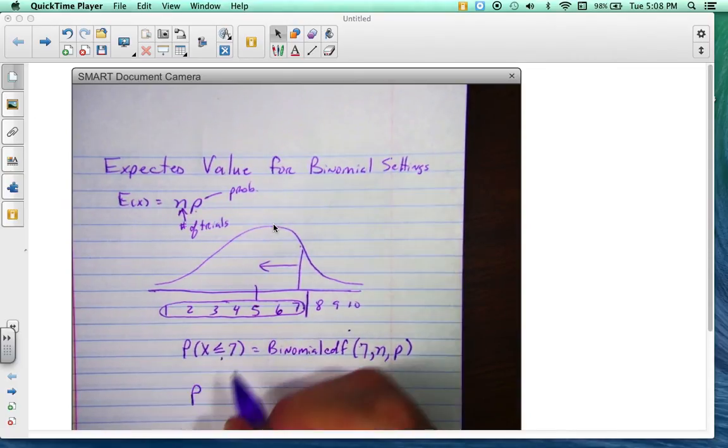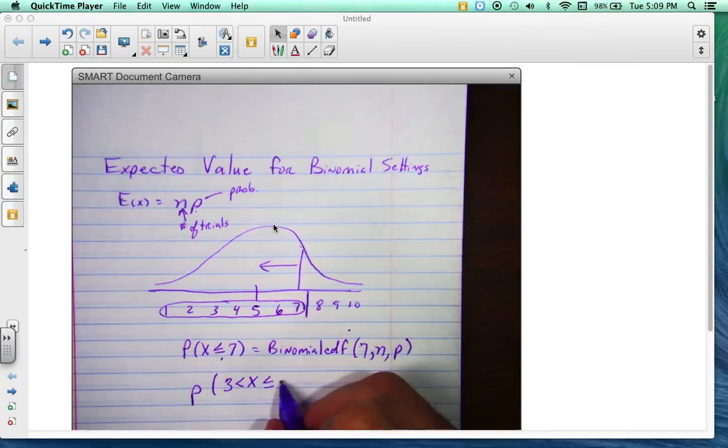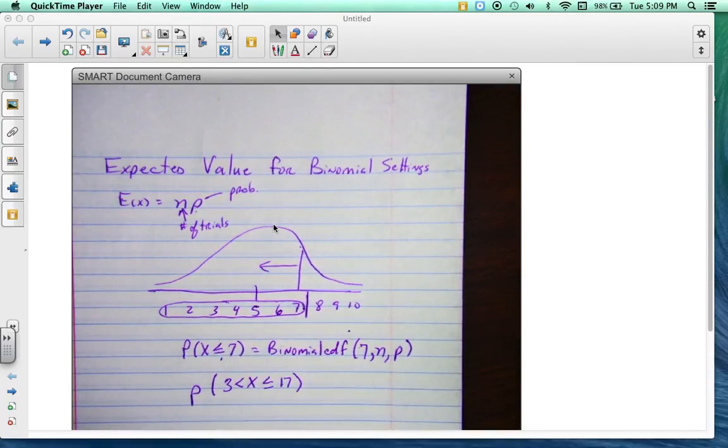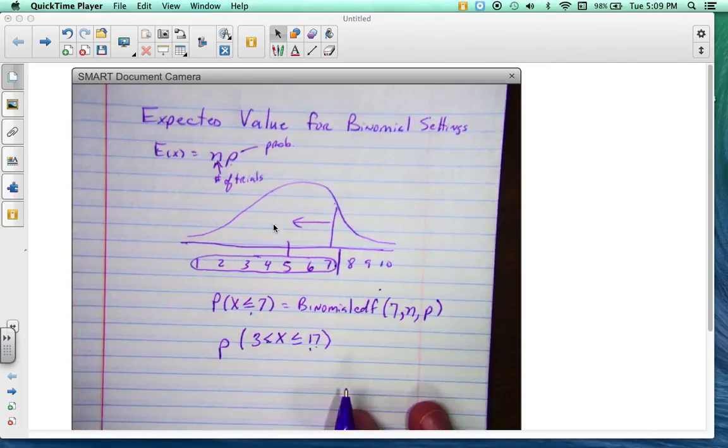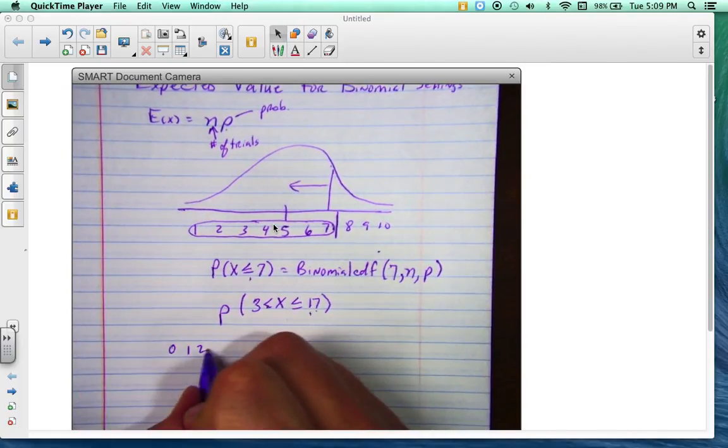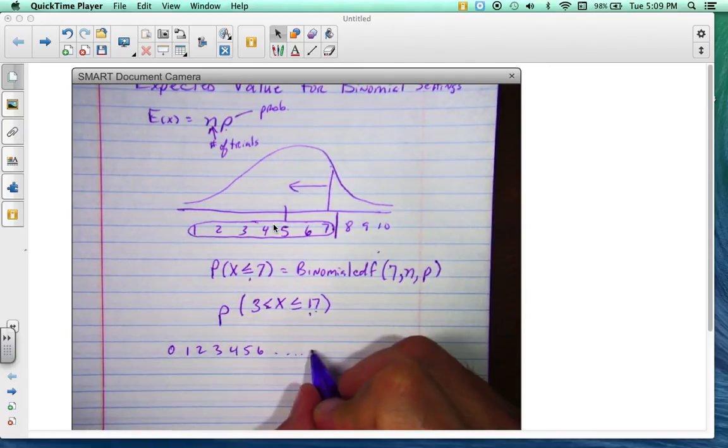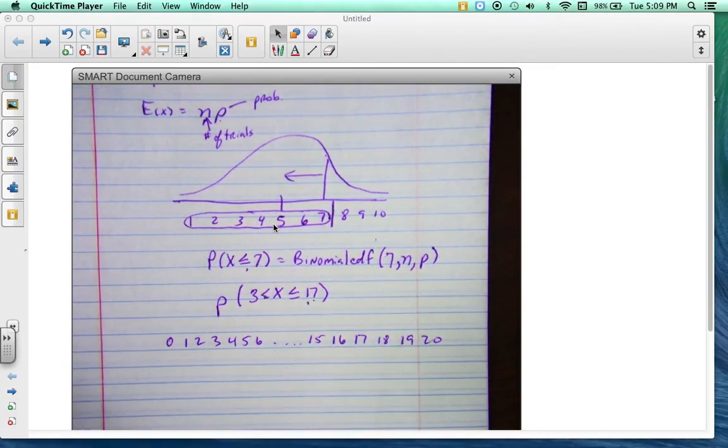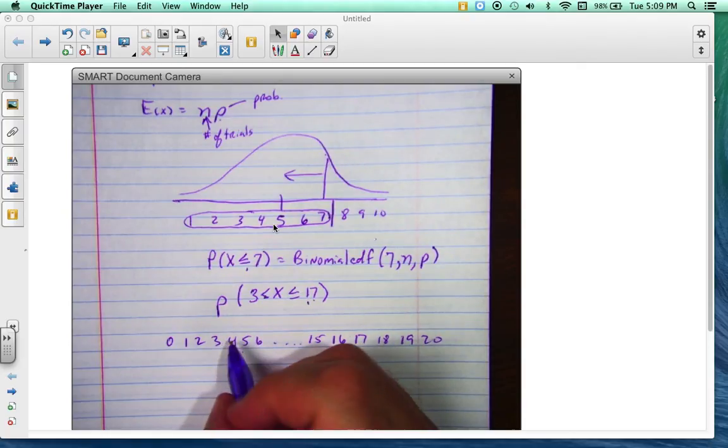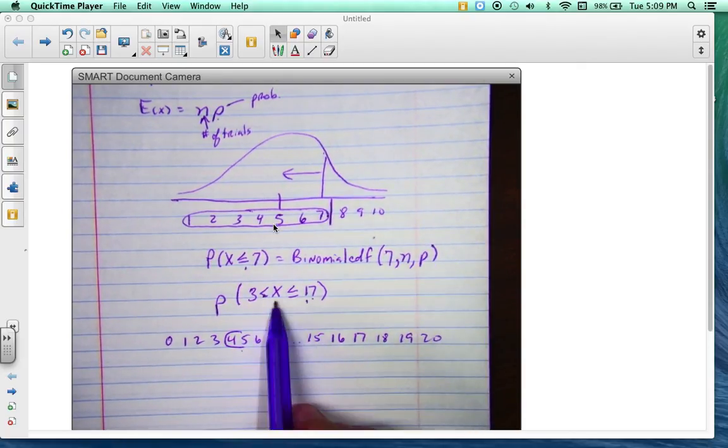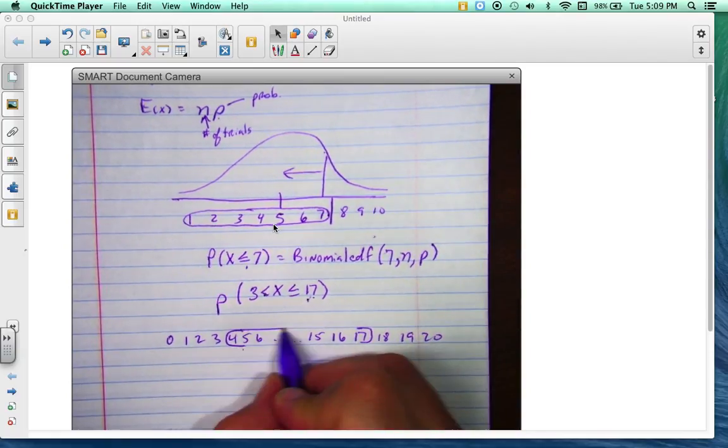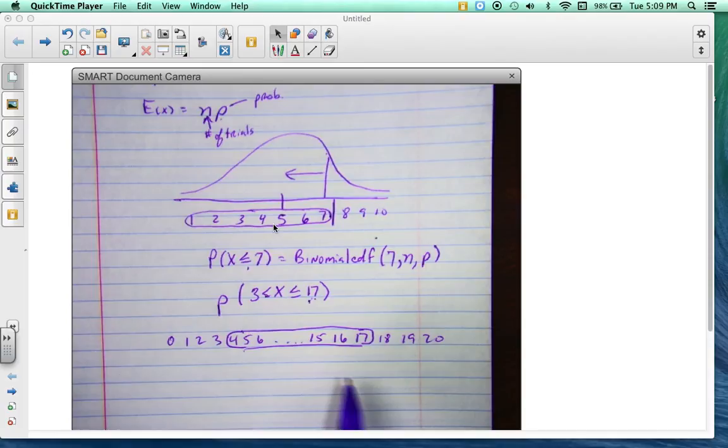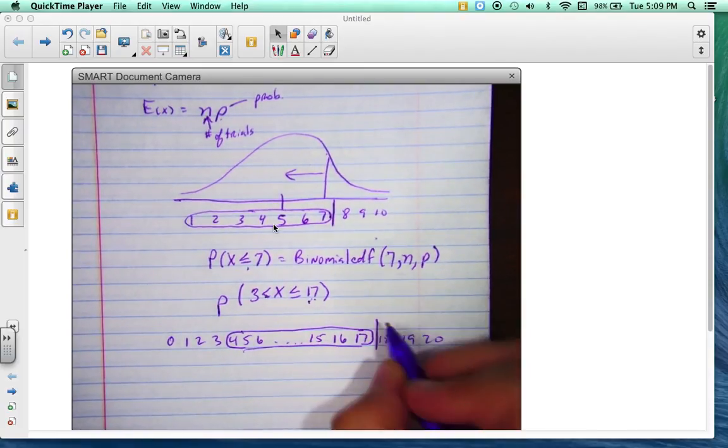Now, what if I wanted the probability of x is greater than 3 but less than or equal to, let's say, 17? So let's say it's between these two. Well, that means it's 0, 1, 2, 3, 4, 5, 6, dot dot dot, 15, 16, 17, 18, 19, 20. Now I know that x is going to be greater than 3, so that means it's going to include 4, but it's going to be less than 17, but including 17. So I want all this right here, all this area. I want the probability that it's going to be in between here.